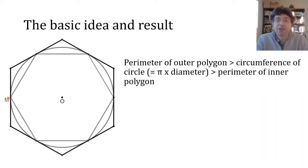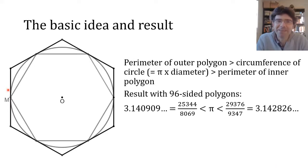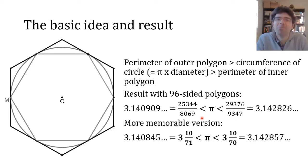Archimedes realized that by starting with hexagons and repeatedly doubling the number of sides he could quickly get a pretty accurate approximation. In fact he stopped after four doublings with 96-sided polygons and found that pi lies between 25344/8069 and 29376/9347, and he then weakened that to his more memorable formulation that it's between 3 and 10/71 and 3 and 10/70.